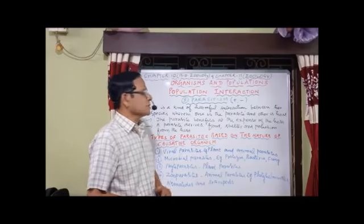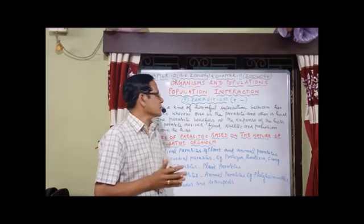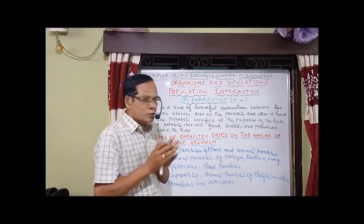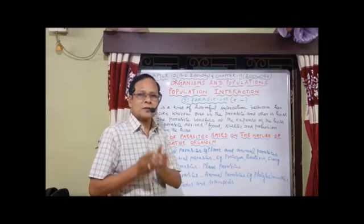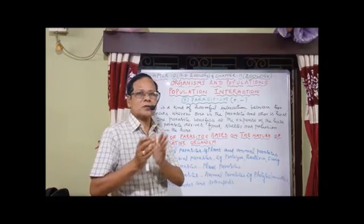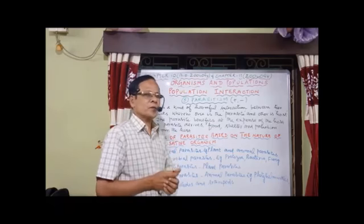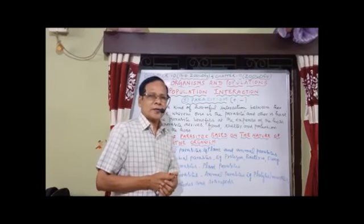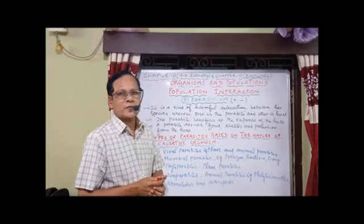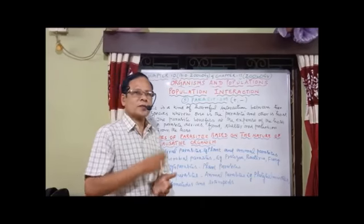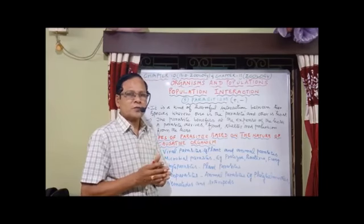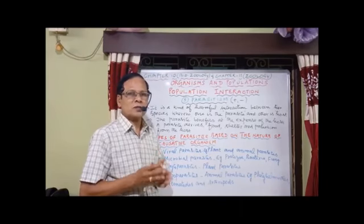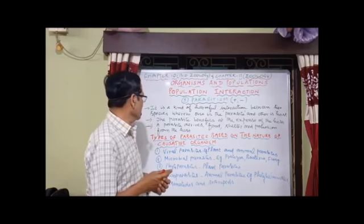Parasitism is a kind of harmful interaction between two different species wherein one species is called the parasite and another one is called the host. Normally the parasite lives at the expense of the host, getting everything from the host. It derives food, shelter, and protection from the host.